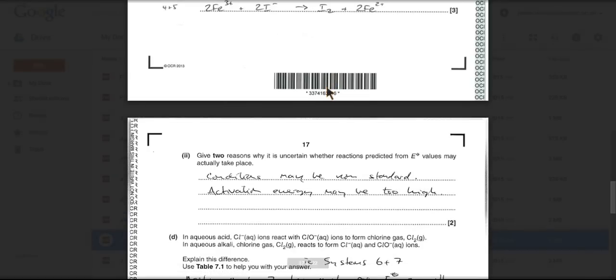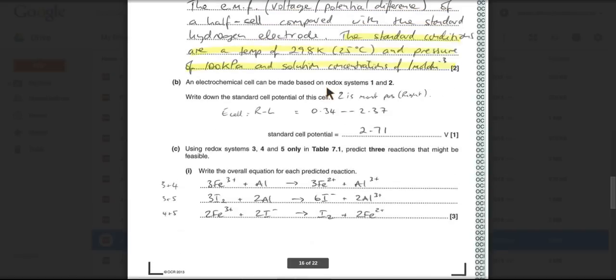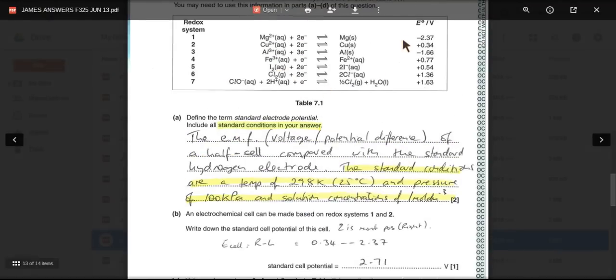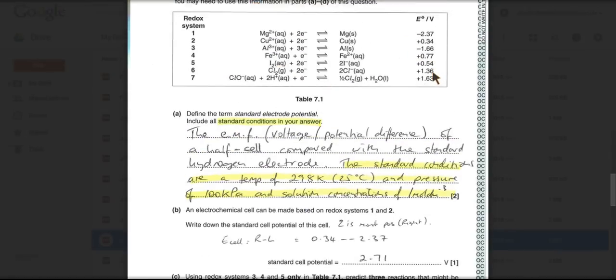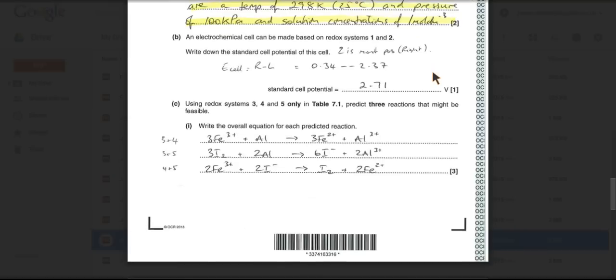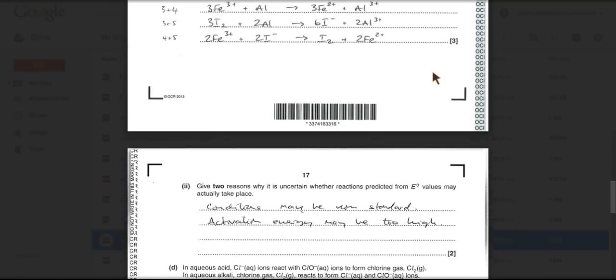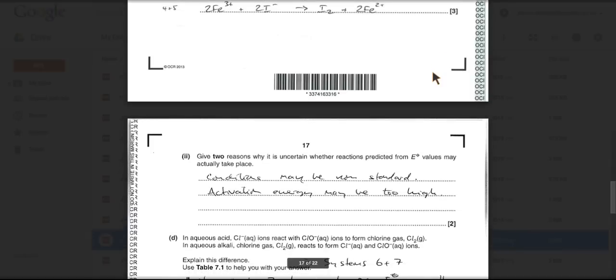Two reasons why it's uncertain whether reactions based on standard electrode potentials may actually take place. So your conditions might not be standard conditions, which would then affect all of these values if it's not standard conditions. And the other reason you can give is the activation energy may be too high.